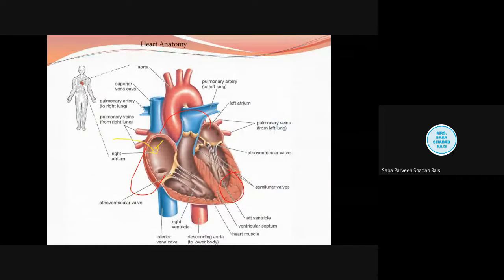The SA node is the pacemaker of the heart. Pacemaker means it is a specialized muscle that starts the heartbeat. This rhythm starts from the right atrium and spreads over the heart. The cardiac muscles have specialized gap junctions, and these gap junctions take this particular rhythm ahead throughout the heart.